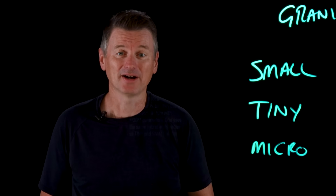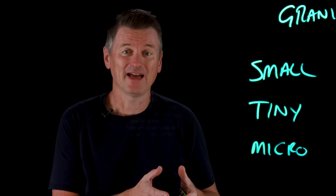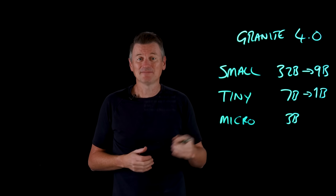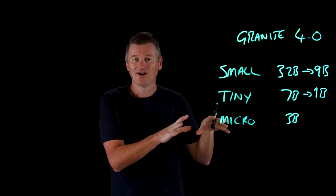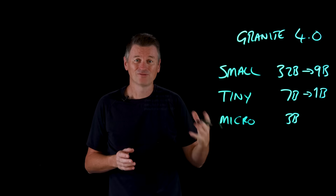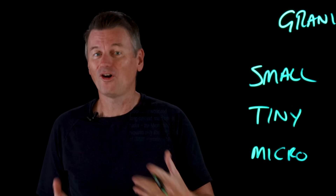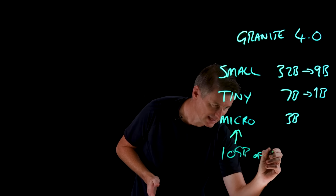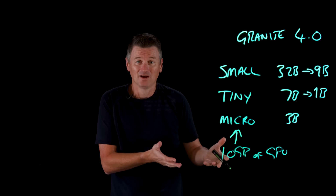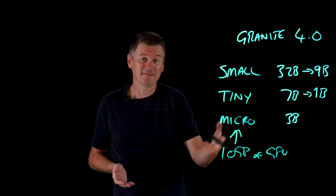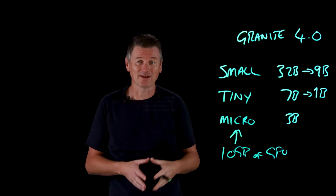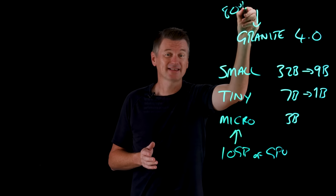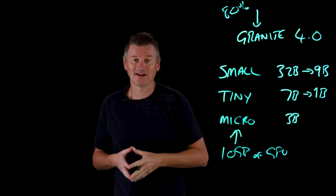One Micro model uses the same hybrid architecture as Tiny and Small, and the other uses a traditional Transformer architecture. The theme here is models that are small in size with fast inference that don't need much compute to run. I really want to focus on memory efficiency for a moment, because this is where Granite 4.0 models really stand out. In a production workload with long context and multi-batch tasks, the Micro model requires only about 10 GB of GPU memory to run, while comparable models typically need four to six times that amount. The result is that Granite 4.0's hybrid design can reduce memory requirements by up to 80%, while delivering higher performance and faster speeds.